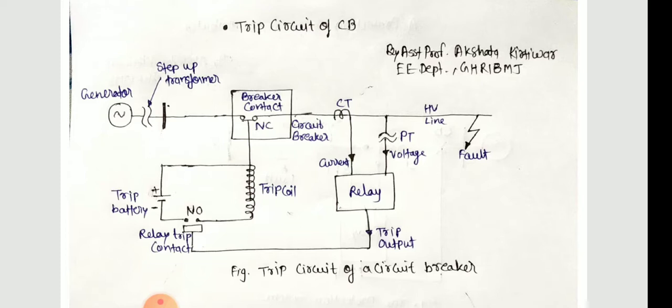In order to trip the circuit breaker, it is necessary to release a latch either manually or by energizing the trip coil of the circuit breaker. The trip battery supplies the energy to the trip coil for this operation.